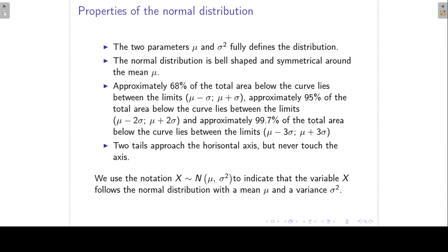When we indicate that a random variable x follows the normal distribution, we use this notation, giving the mean as the first parameter and the variance as the second parameter. Note that the second parameter is not the standard deviation — it is the variance.